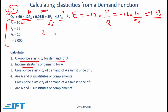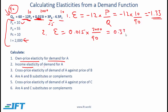For income elasticity of demand for A, we take the coefficient 0.015 — which is positive, indicating A is a normal good — multiplied by income over quantity. Income is 2000 and quantity is 90, giving 0.33. This is a positive number confirming A is a normal good, and the income elasticity is relatively low.